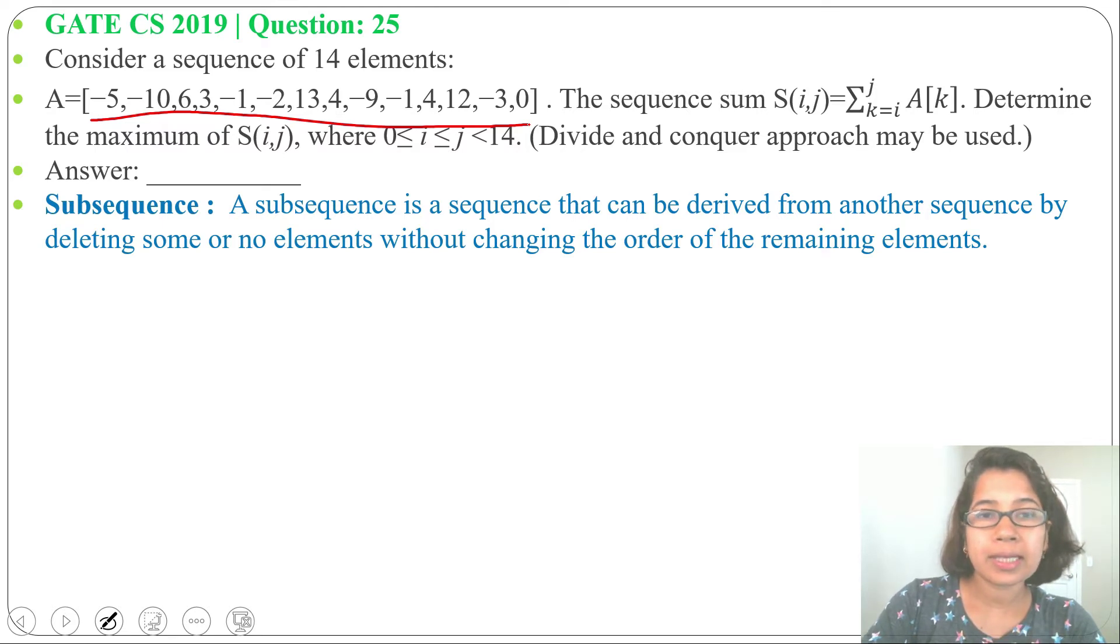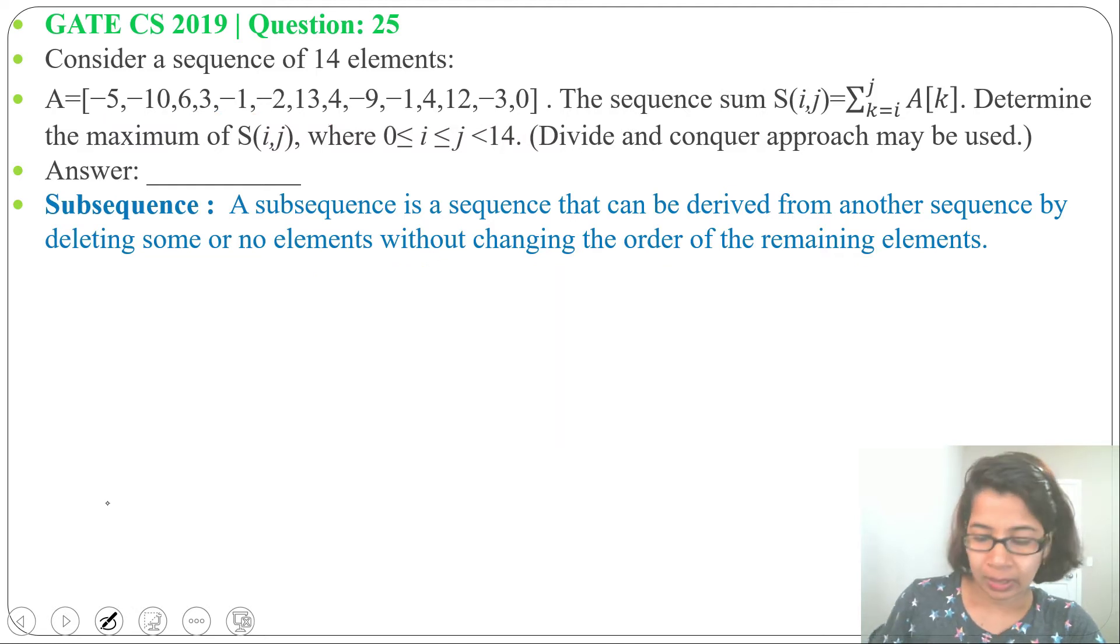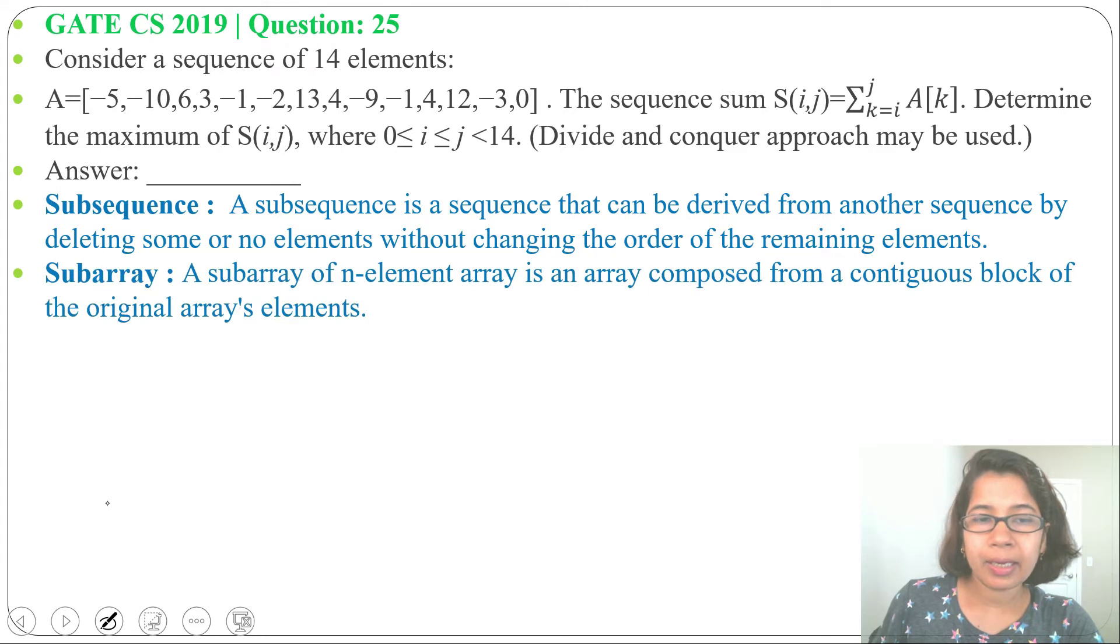It's not necessary continuous. We can choose minus 10, then minus 1, then 13, then 4, then 0. So this is a subsequence, but its sequence should not be changed. Minus 10 first, then minus 1, then 13, then 4, then 0.